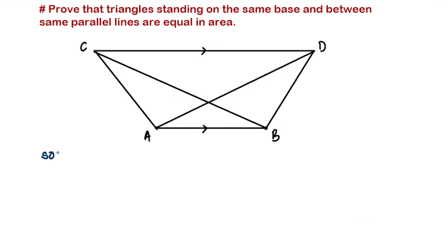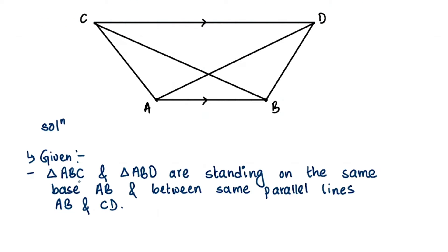First let's write the given things. We are going to write the given from this figure. We have triangle ABC and triangle ABD standing on the same base AB and between the same parallel lines CD and AB. Triangle ABC and triangle ABD are standing on the same base AB and between the same parallel lines CD and AB.